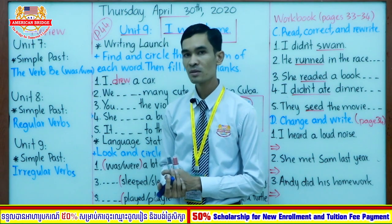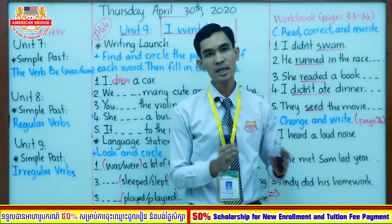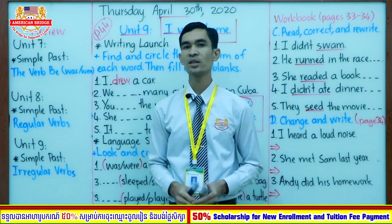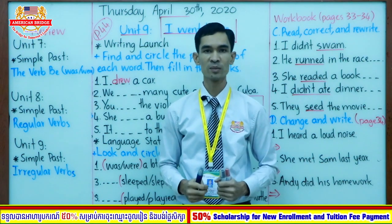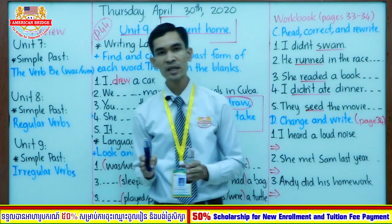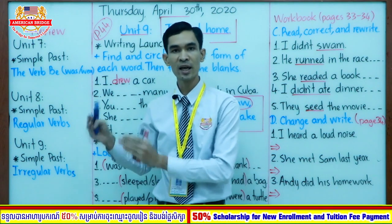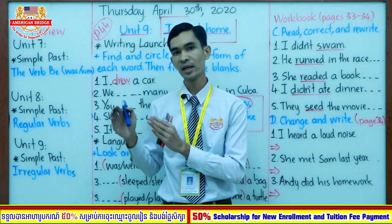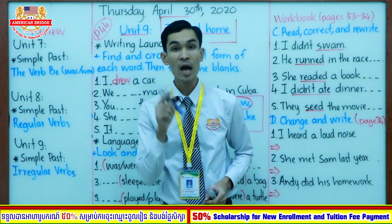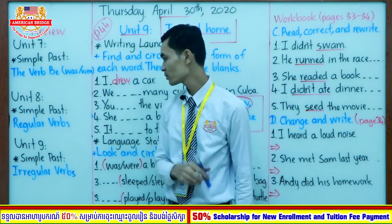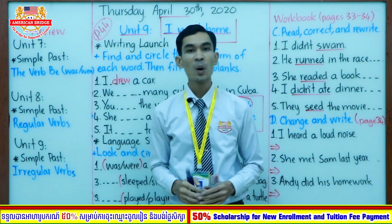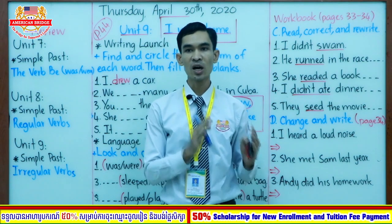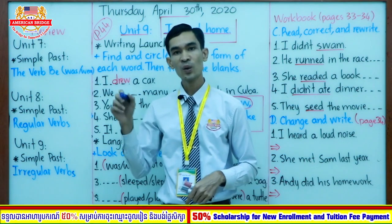Did you remember regular verbs? Good. These are the verbs where we add -ed, -d, or -ied. When do you add -ed? We add -ed to most verbs. When do you add -d? We add -d to verbs ending in the letter 'e' — for example, 'dance,' so you add only -d. How about -ied? When the verb ends in 'y' and the letter before 'y' is a consonant, you need to change 'y' to -ied.